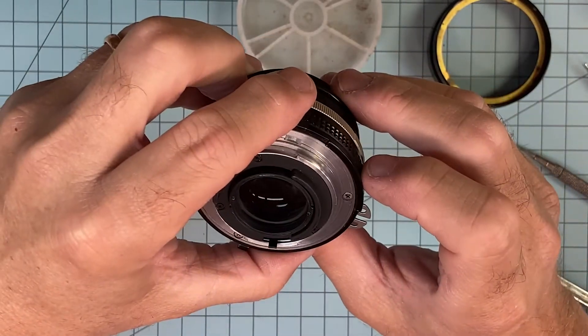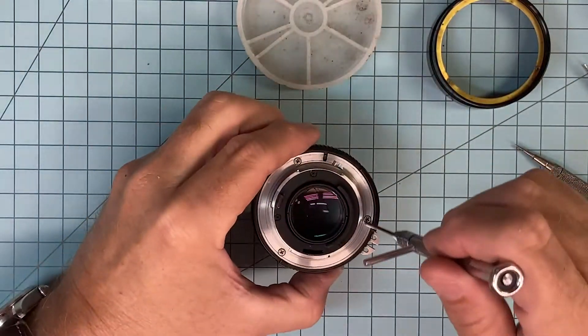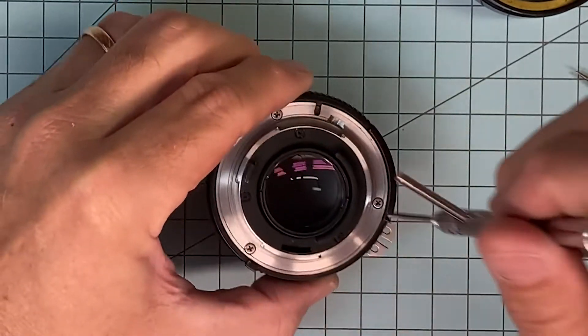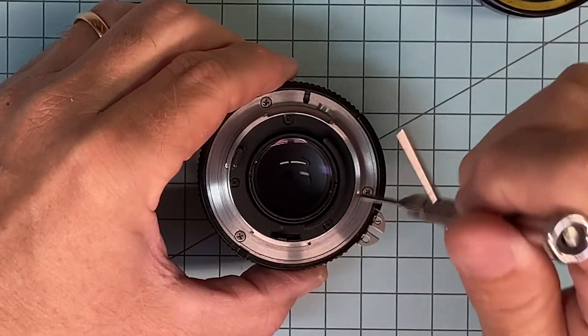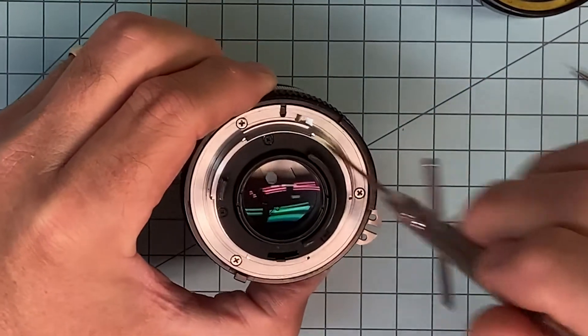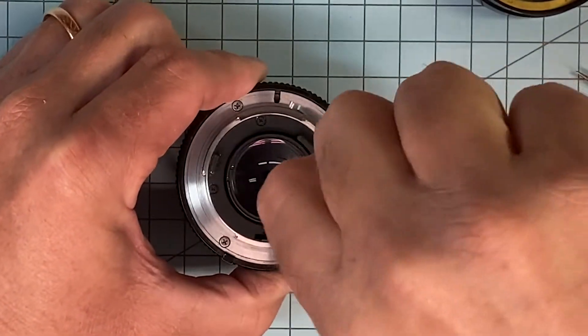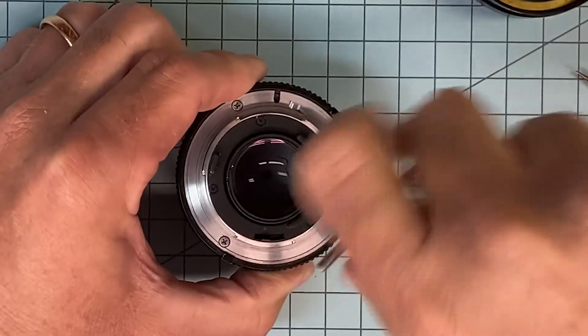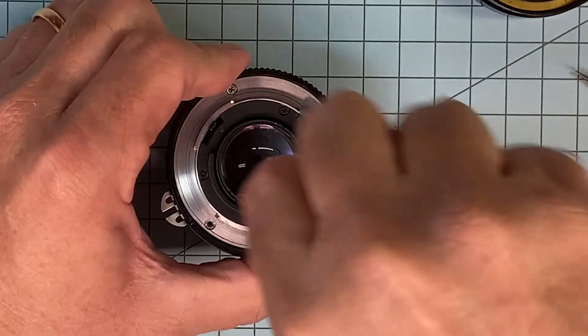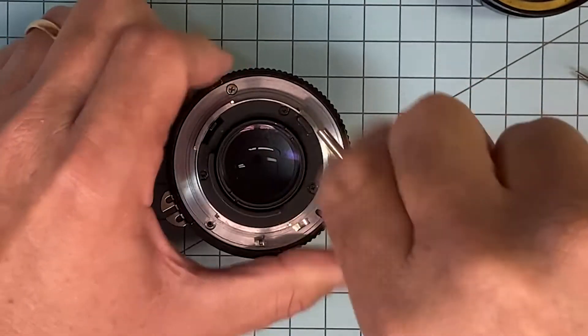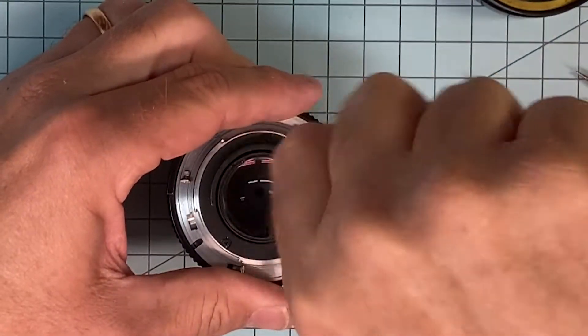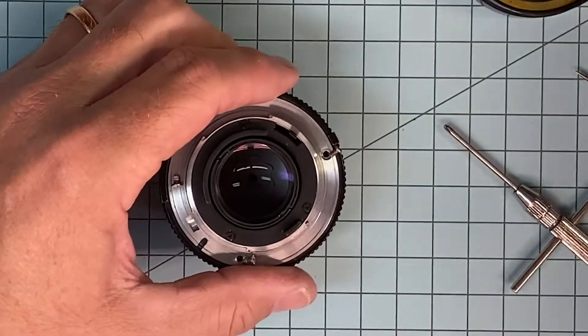We're going to take the rear mount off. This is not a big deal. Three screws: one, two, three. Don't worry about this inner ring. A lot of people take the inner ring off. You do not need to, not on these lenses. AF lenses, yes. This lens, no.